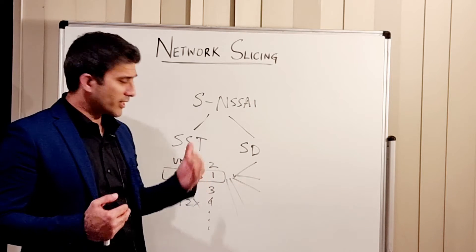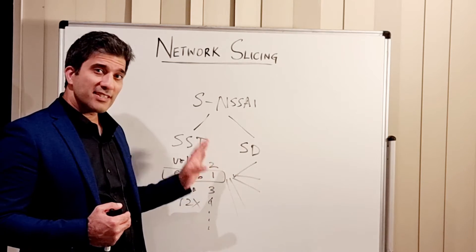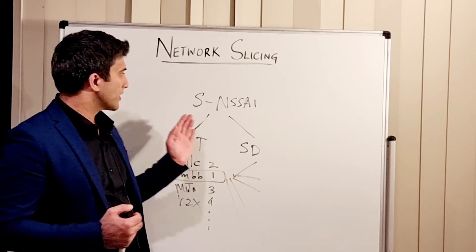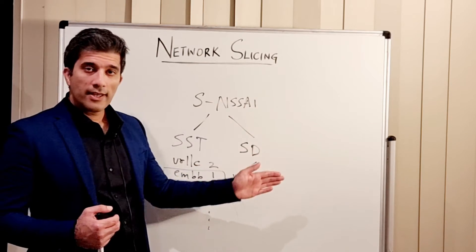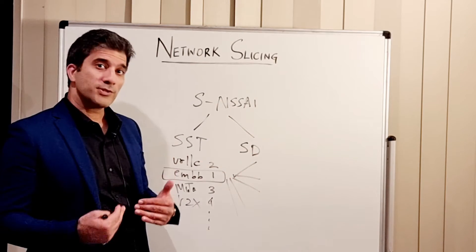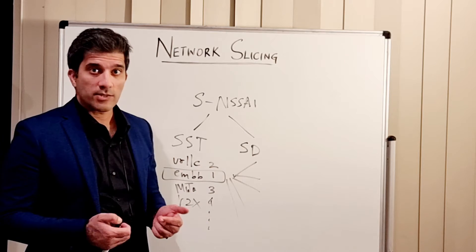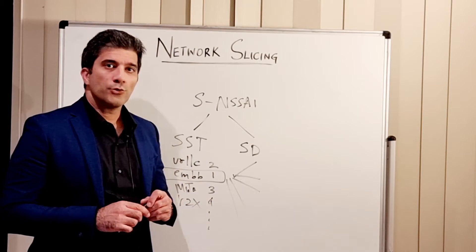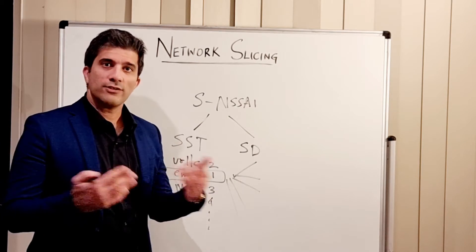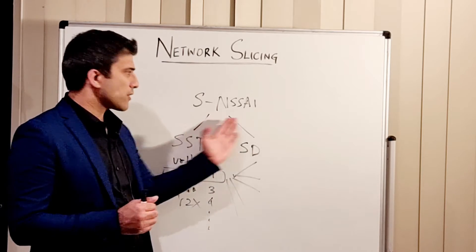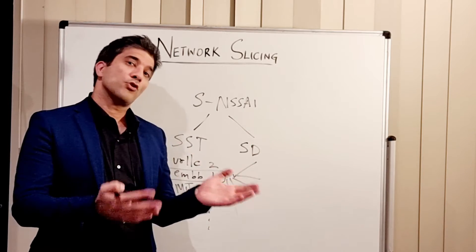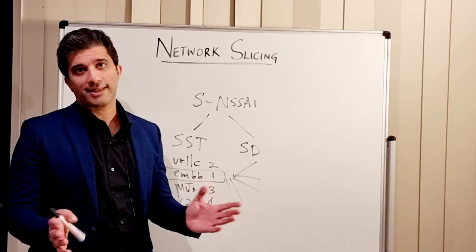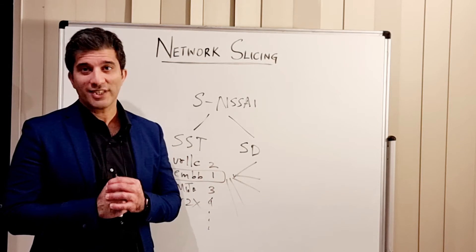This is configured on your core side — that is called your configured SNSSAI — and it is also subscribed on your UE SIM. When your UE sends out messages to the core during registration, it will send out this identifier, and then your core will select the required slice to give to that UE.